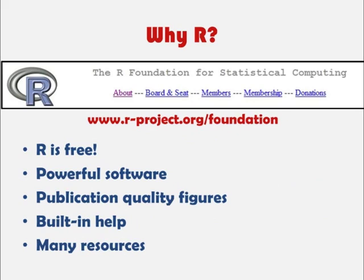To perhaps sway you about why R may be good for your breeding program: unlike a lot of other statistical software, R is freely available and doesn't require you to purchase or renew a license. It's very powerful — not only for analyses but also for creating publication quality figures. Many resources are constantly being developed and updated, which is a real benefit for genomic-level analyses where the field is growing quickly. There's also built-in help and forums available online where you can obtain help with R.